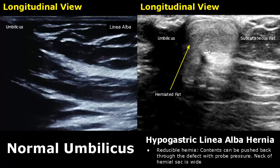In a reducible hernia, the herniated contents can be pushed back through the defect to their normal positions by applying probe pressure. These type of hernias have a wide neck.